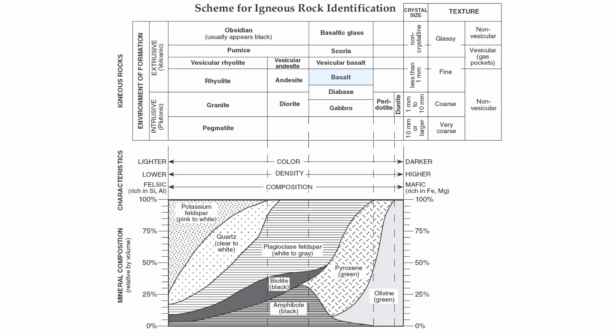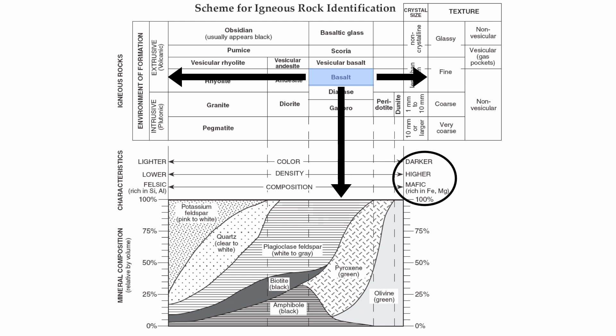And then finally, basalt, for instance. Basalt is extrusive, quick cooling, because it has small crystals. It's going to contain the minerals directly below it, and it's going to be a mafic composition. So I hope this helps out. Really make sure you know how to read your reference table, especially your rock charts — you get a lot of information from them. Your igneous rock chart is going to be very important for you to know. Good luck, and we'll talk to you soon.